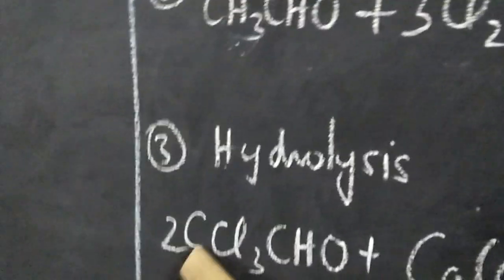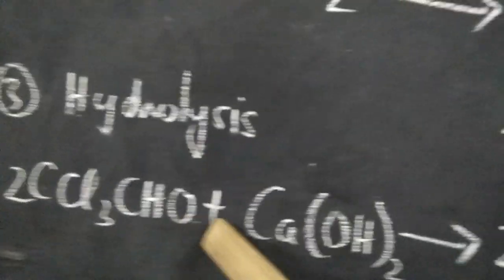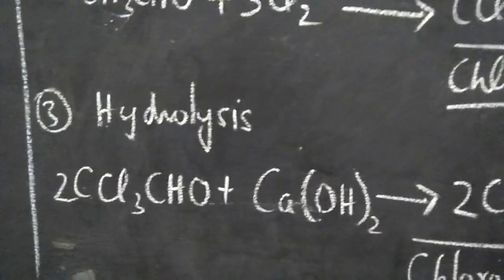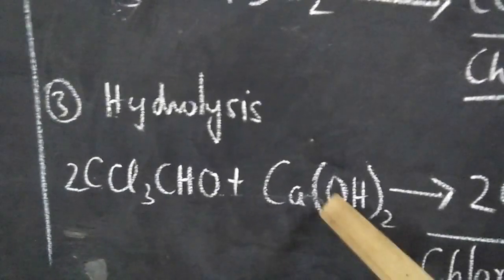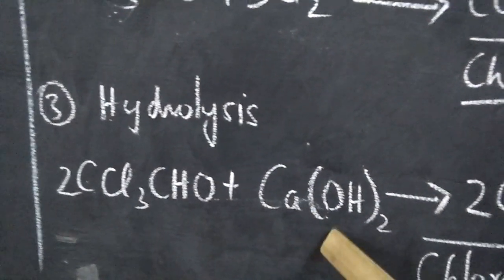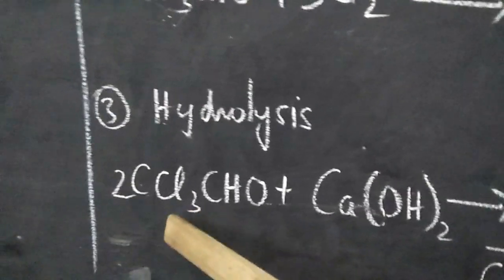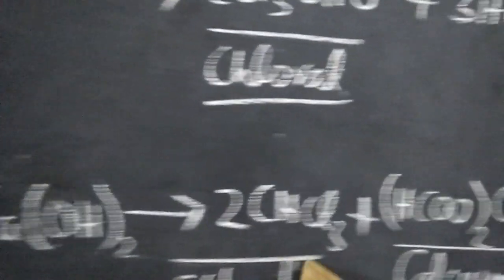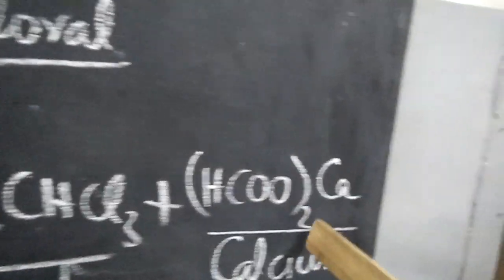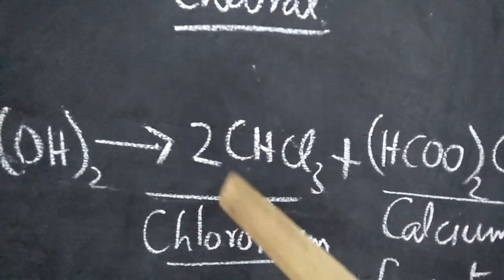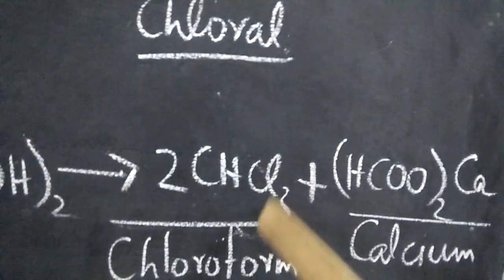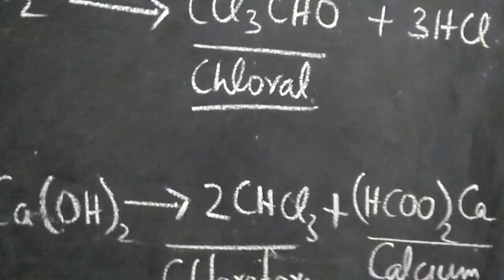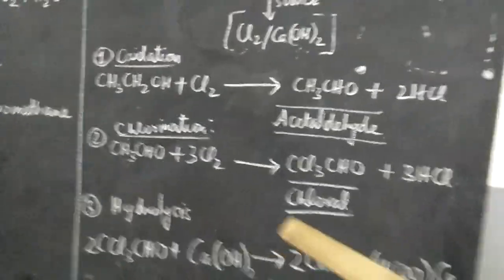And this chloral, the third step, undergoes hydrolysis. Hydrolysis can be done in the presence of an acid, a base, or just water. Here, a weak base, calcium hydroxide. In the presence of the weak base, chloral is hydrolyzed to form chloroform and the byproduct is calcium formate. CHCl3 is the formula. This preparation of chloroform takes place in three steps.